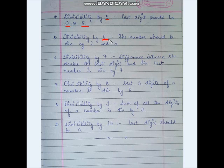Divisibility by 6: a number is divisible by 6 if it is divisible by both 2 and 3. When a number is divisible by both 2 and 3, it means it is also divisible by 6.